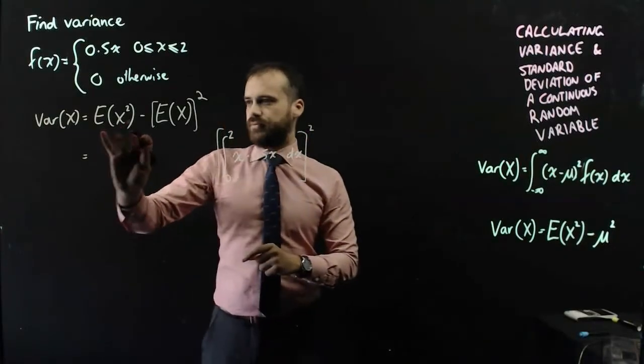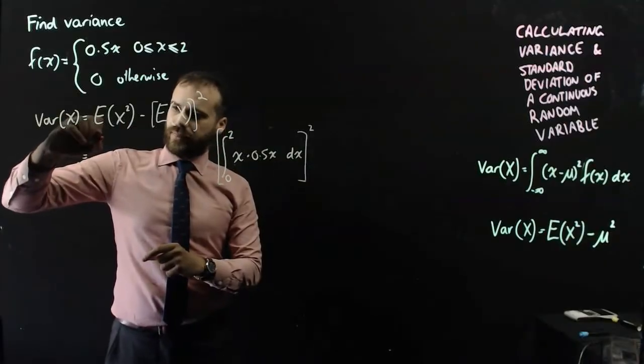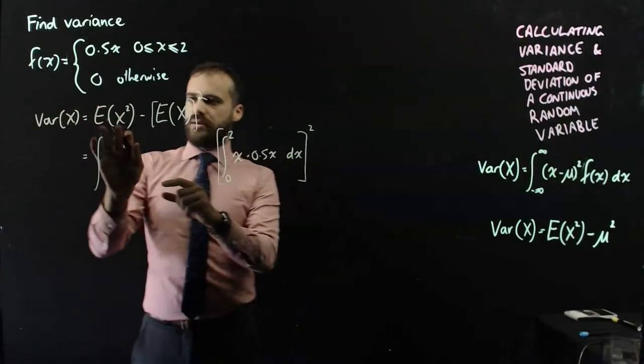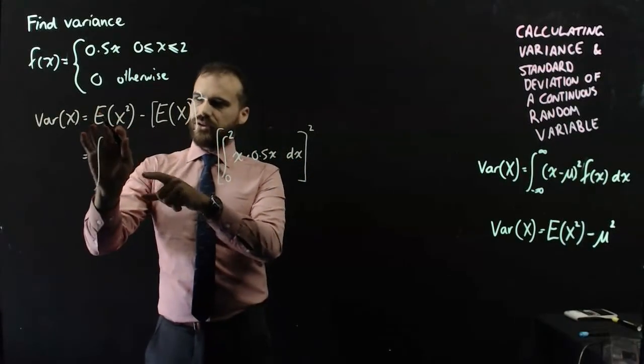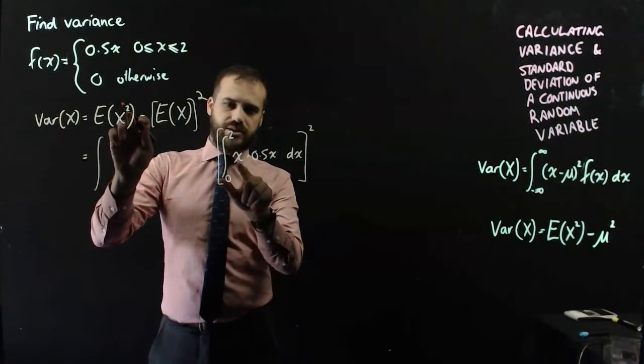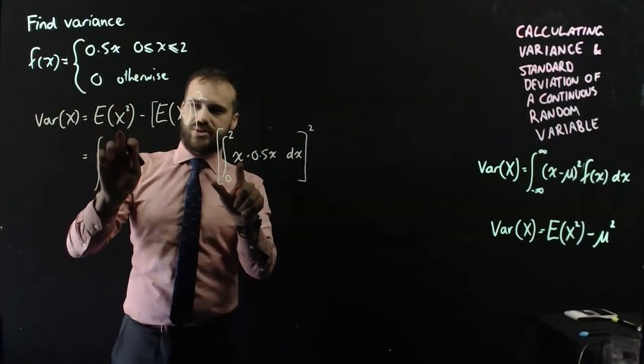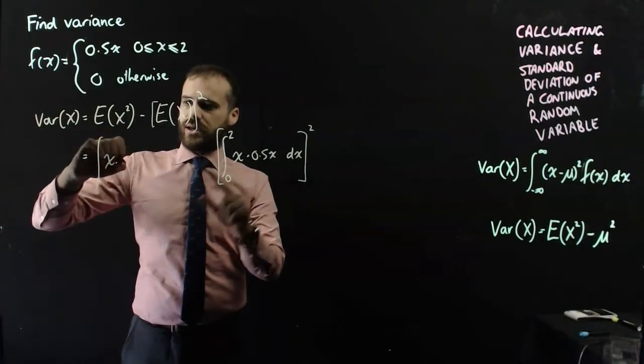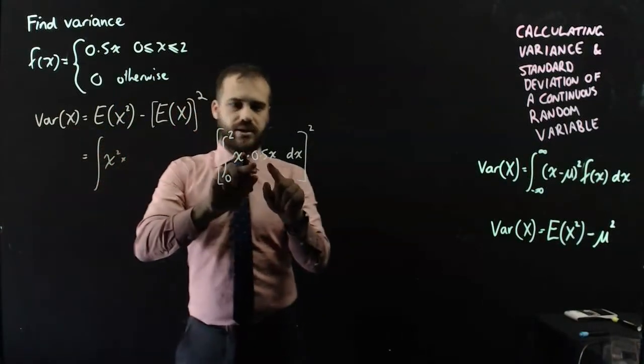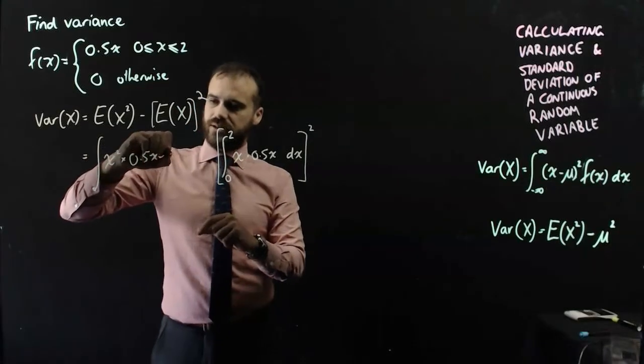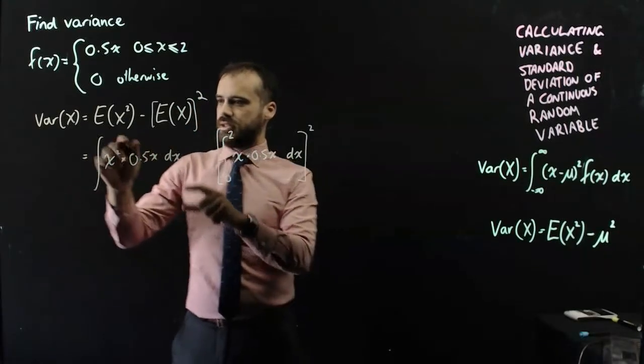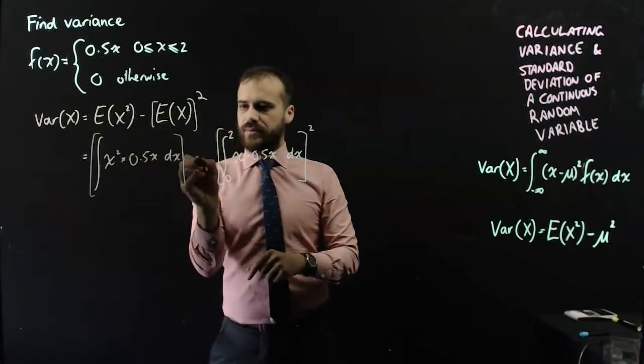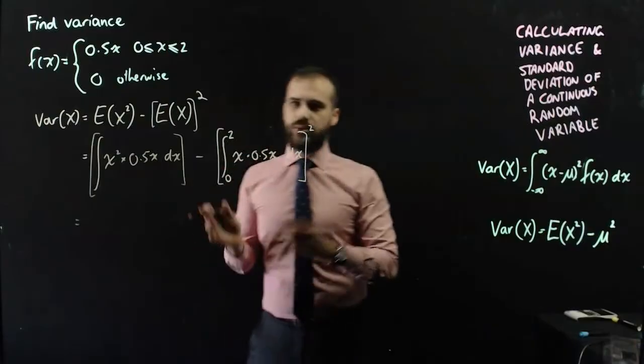Now, what about this bit? Well, I'm finding... I'm still finding a mean, so I can still use the mean formula, or an expected value, but I'm squaring my x. So, instead of just placing an x here, I need to place an x squared there. So I'm going to be doing x squared times the function 0.5x with respect to x. And then I'm subtracting the two of them.